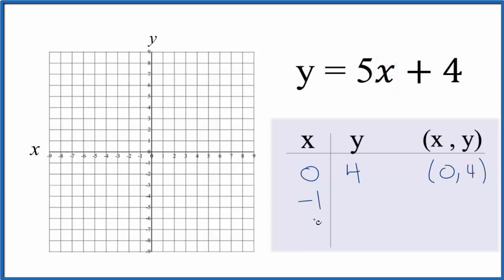Let's choose negative 1 next. That'll help it fit on our graph, because 5 times negative 1, that's negative 5, plus 4, that gives us negative 1. So we have this point here.